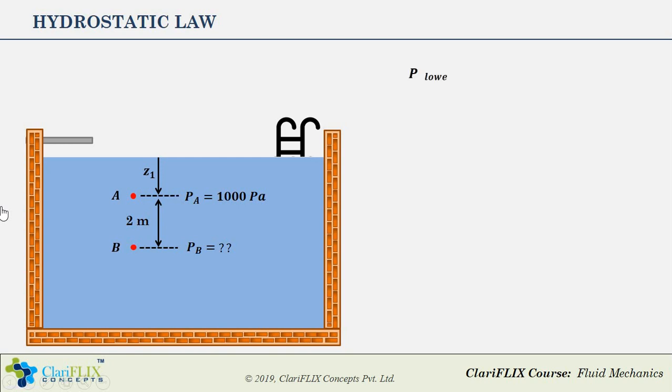So pressure at lower altitude point equals pressure at higher altitude point plus ρgh. Here point B is at lower altitude and point A is at relatively higher altitude. So we can rewrite this equation as pressure at point B equals pressure at point A plus ρgh.